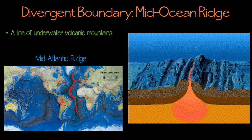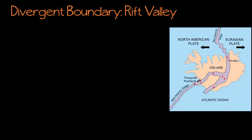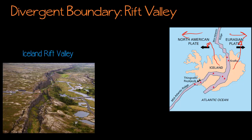Iceland is an island in the mid-Atlantic ridge. Part of Iceland is on the North American plate and part of Iceland is on the Eurasian plate, and those plates are pulling apart in opposite directions — they're divergent. So they're creating what's called a rift valley. Rift valleys are formed when plates diverge on land instead of underwater.